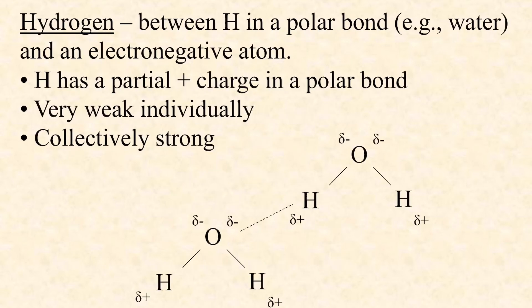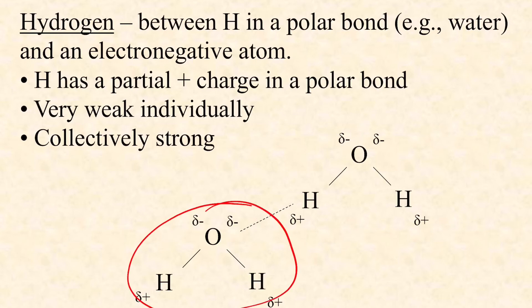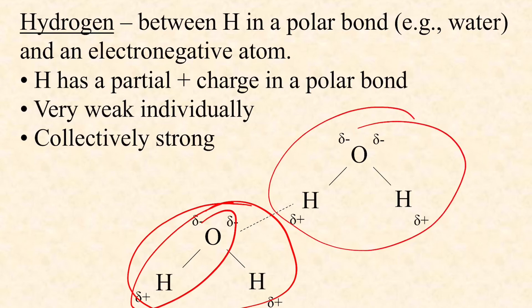Hydrogen bonds can be thought of as sort of baby ionic bonds. They happen when you've got polar covalent bonds — like in a water molecule with a partial positive around the hydrogen and two partial negatives around the oxygen. The partial positives of one water molecule are attracted to the partial negatives of another, and vice versa. This is why water has a certain cohesiveness — it's somewhat sticky to itself because of these hydrogen bonds.